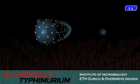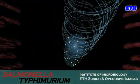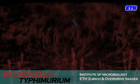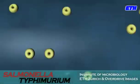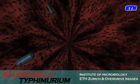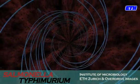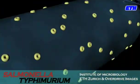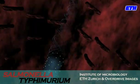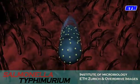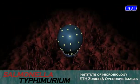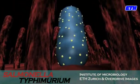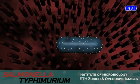Salmonella Typhimurium uses its flagella to swim towards the surface of the epithelial cells, which is covered with a vast number of small extensions called microvilli, which increase the surface area for absorbing nutrients. Several factors on the Salmonella surface help the bacteria to attach to the epithelial cells. These adhesins play an important role for the colonization and persistence of the bacteria in the intestinal lumen.